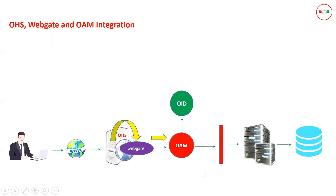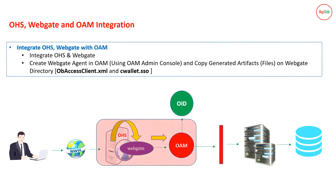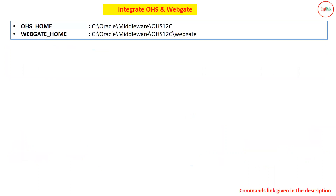This is a basic flow diagram that we discussed in session one and session two — how the request flows from the gate to OEM to OID. In this video we will see how we can practically implement or integrate our WebGate and OHS with OEM. As I explained in session two, for integration of OHS and WebGate you have only two steps — you have to execute only two scripts that come with WebGate.